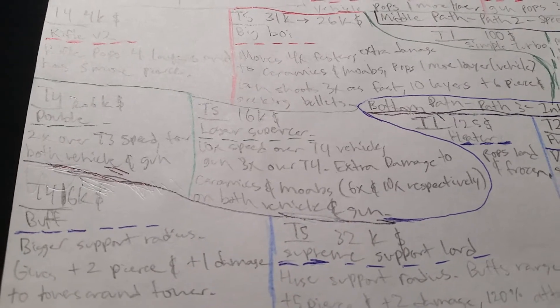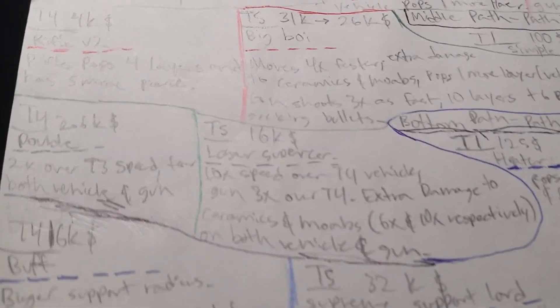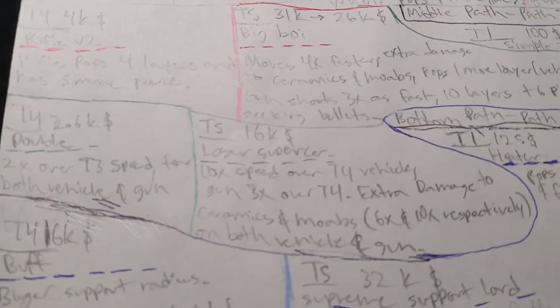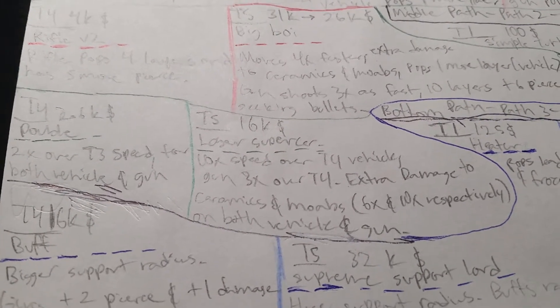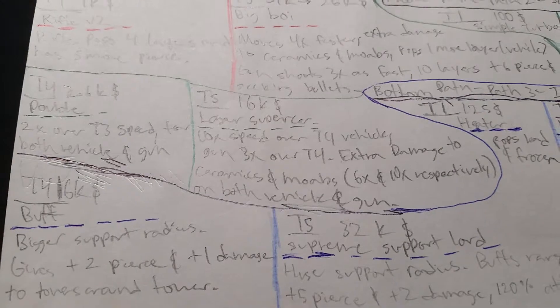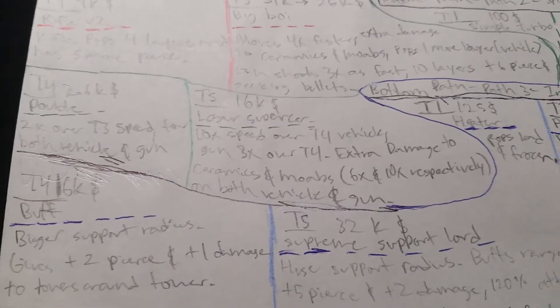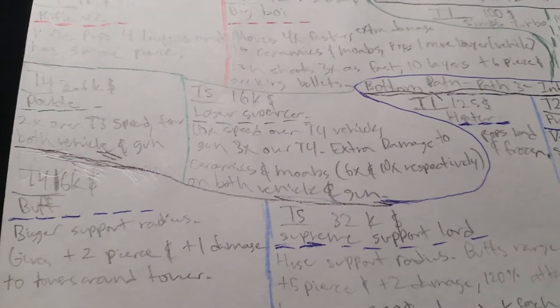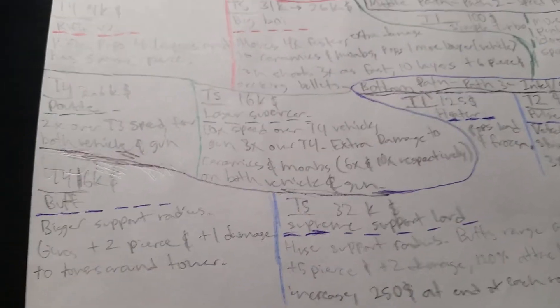Tier 5, 16K, laser super car. It is 10 times speed over tier 4 vehicle, and gun 3 times over tier 4. There's extra damage to ceramics and MOABs, 6 times for ceramics and 10 times for MOABs on both vehicle and gun.